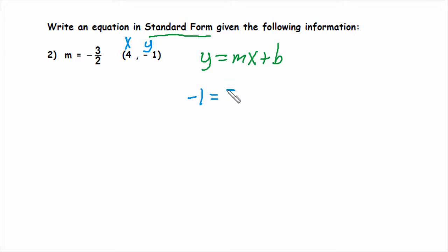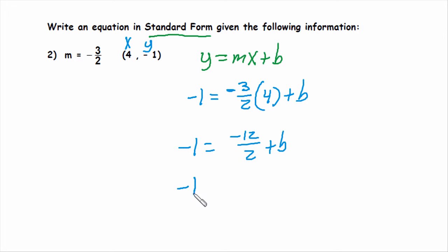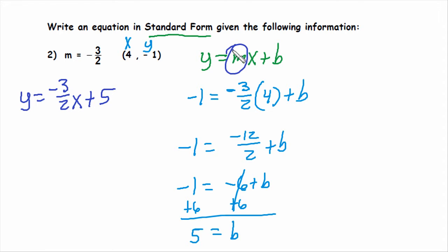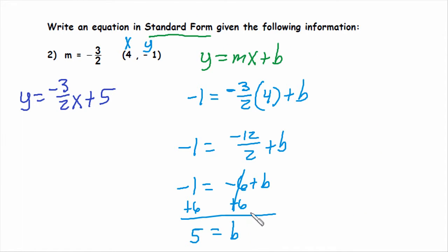So y is negative 1, slope is negative 3 over 2, and x is 4, plus b. The only unknown is b, the y-intercept. Working that out: negative 1 equals negative 3 halves times 4, which is negative 12 over 2, plus b. Simplifying: negative 1 equals negative 6 plus b. Adding 6 to both sides gives b equals 5. So in slope-intercept form that equation is y equals negative 3 halves x plus 5.